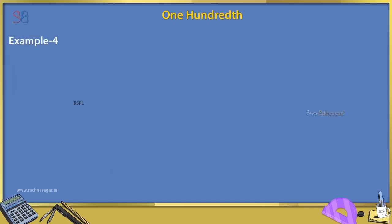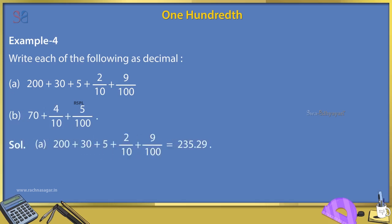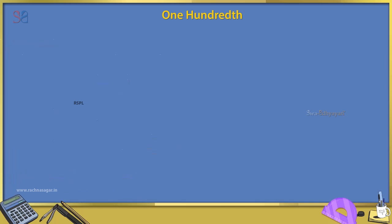Example 4: Write each of the following as decimals. A. 200 + 30 + 5 + 2/10 + 9/100. B. 70 + 4/10 + 5/100. Solution: B. 70 + 4/10 + 5/100 = 70.45.